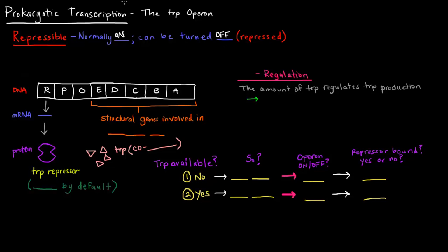Repressible means you can turn it off, so normally it's on and it can be turned off or repressed. So what is this tryptophan operon involved in? Tryptophan is an amino acid, and this operon is involved in making these structural genes that are involved in making tryptophan.